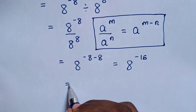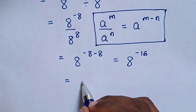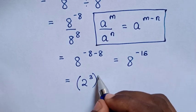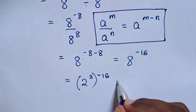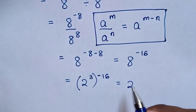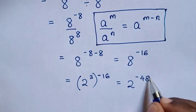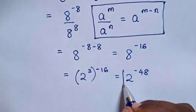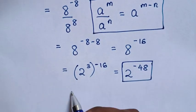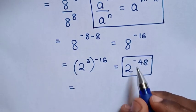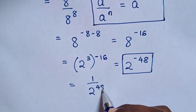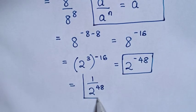So it will be equal to: 8 is the same as 2 power of 3, then bracket, power of negative 16. So it will be equal to 2 power of 3 times negative 16, which is 2 power of negative 48. So this is the correct answer. Or, it can be equal to — because of this negative — 1 over 2 power of 48. So this is also the correct answer.